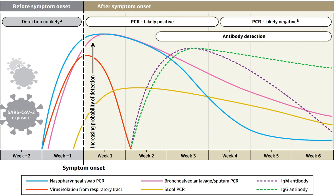Detecting the virus is mainly done by nasopharyngeal swab collection, shown here as the blue line, while the pink line denotes the bronchoalveolar lavage and sputum PCR. Nasopharyngeal swabs tend to become positive earlier, followed by the bronchoalveolar lavage PCR. By week three, there is a sharp decline in positivity rate of nasopharyngeal samples, though sputum samples continue to be positive beyond three weeks. Viral isolation is a difficult process and is not actively done during the pandemic.